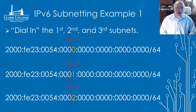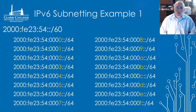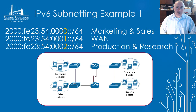Step three, we dial in the first, second, and third subnets. There's no need for a scratchpad since we're working with whole nibbles. Starting at zero and counting up — 0, 1, 2, 3, 4, 5, 6, 7, 8, 9, a, b, c, d, e, f — we have 16 subnets in total. We only need the first three, so we go ahead and assign those to Marketing and Sales, our WAN, and Production and Research.